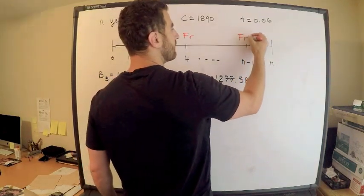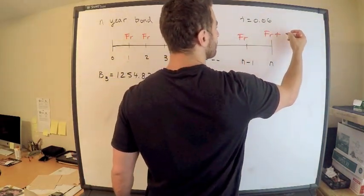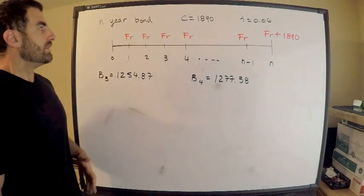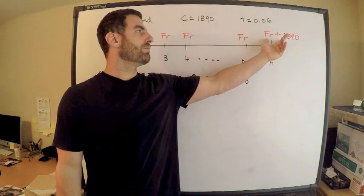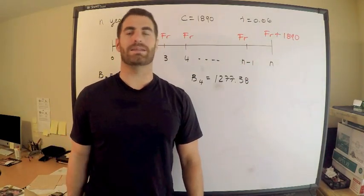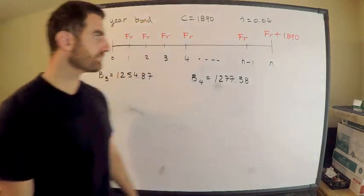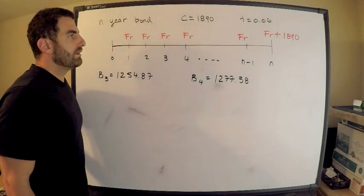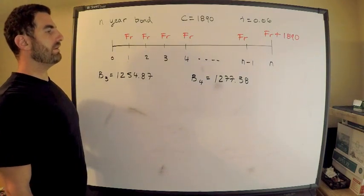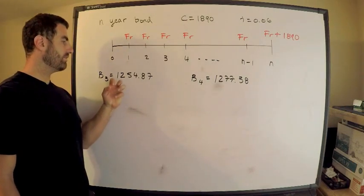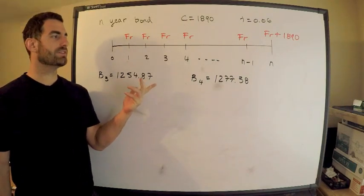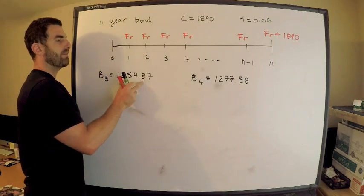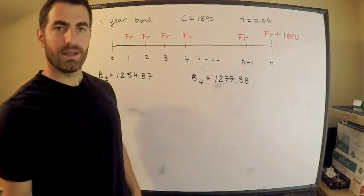The coupons are paid at times one, two, three, and so on, up through the final period, plus the redemption value C = 1890 at the end. We're also given that the book value after three coupon payments is 1254.87, and after the fourth coupon payment it's 1277.38.